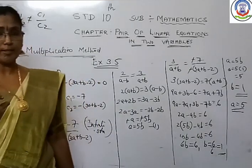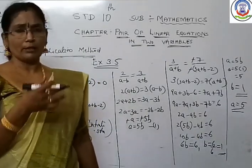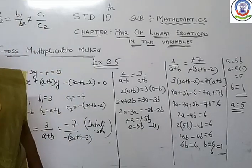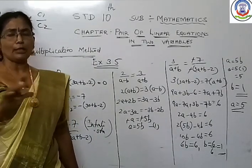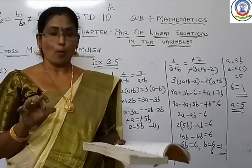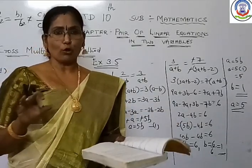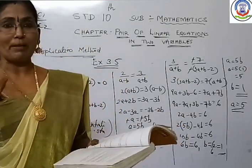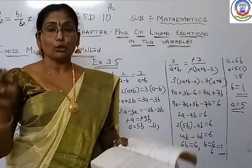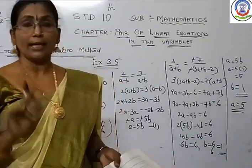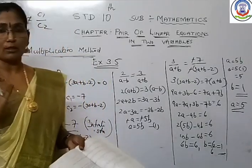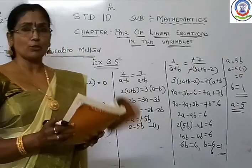This you have already learned in the previous class — Exercise 3.3 had the same type of sums, so there is no need to explain again. That means Exercise 3.5, Question 1 — you can do as homework. There are four sub-questions. For the second sub-question, 2x + y = 5 is given, so you have to take 5 to the left side and make it standard form. Other things are as usual.